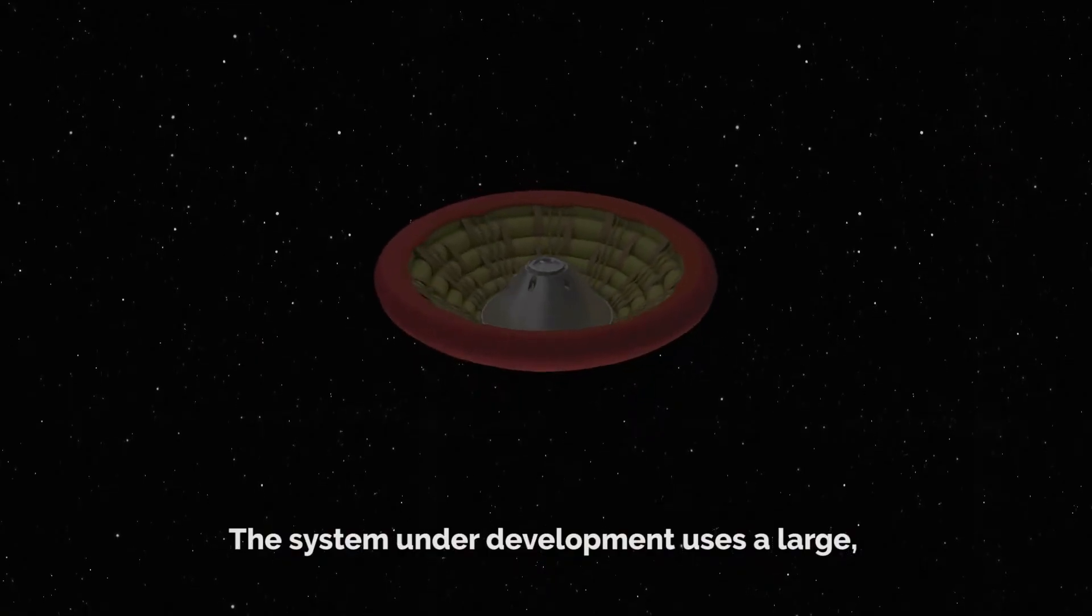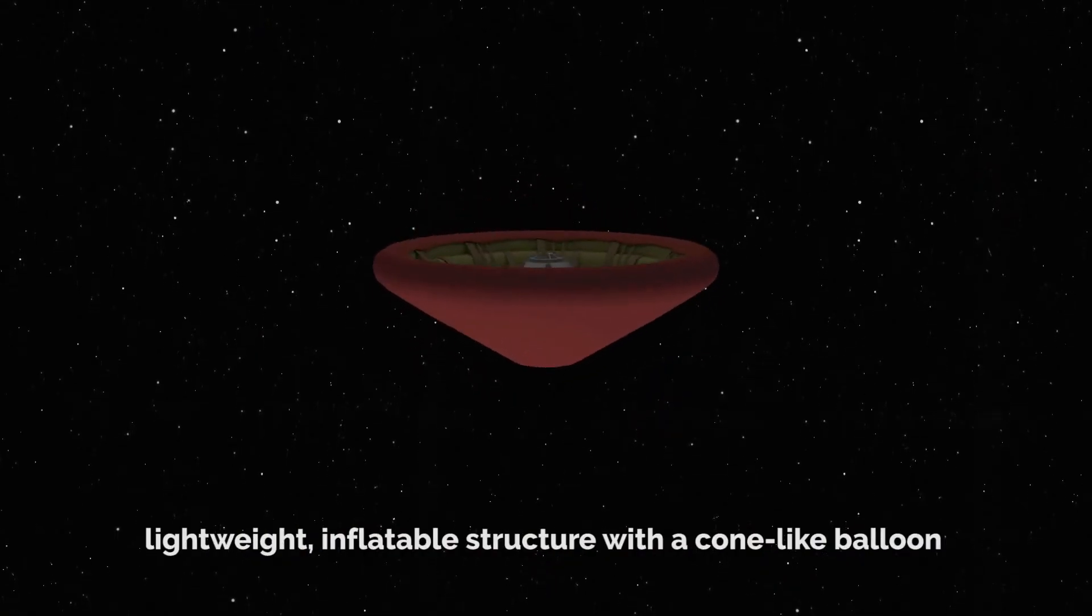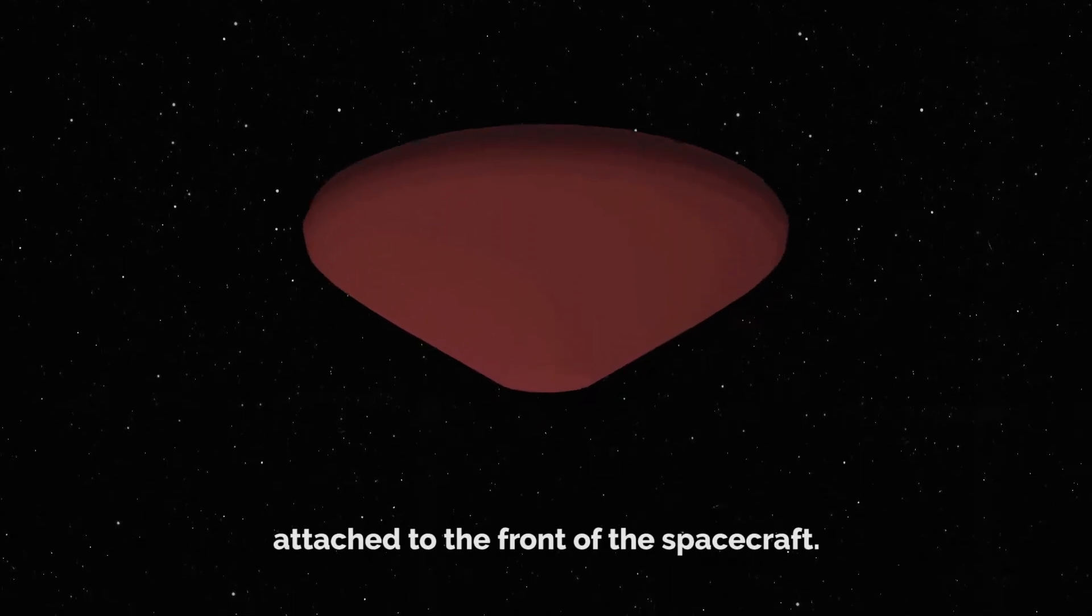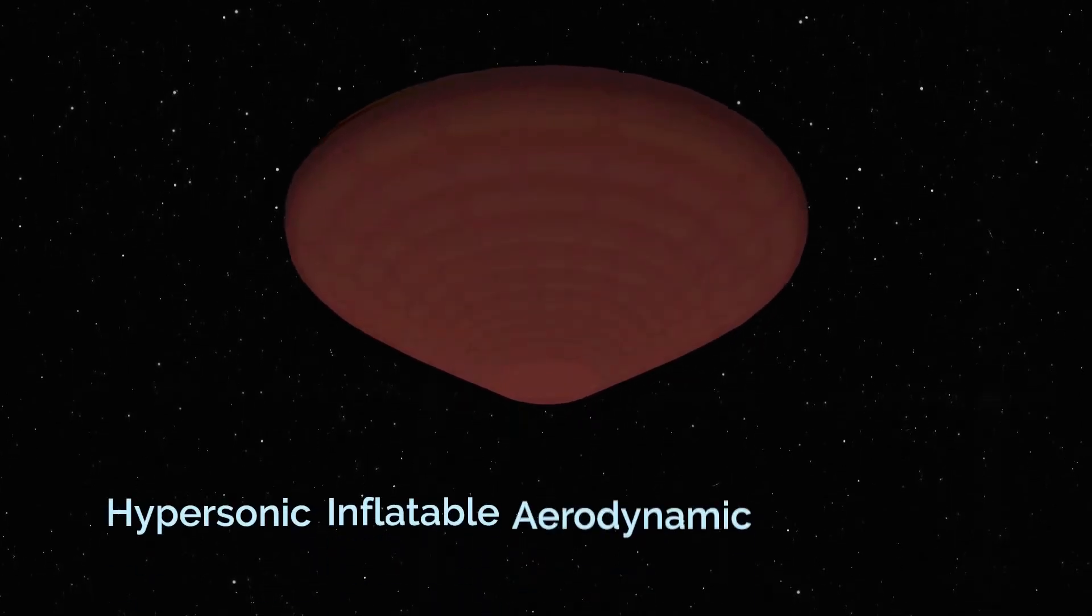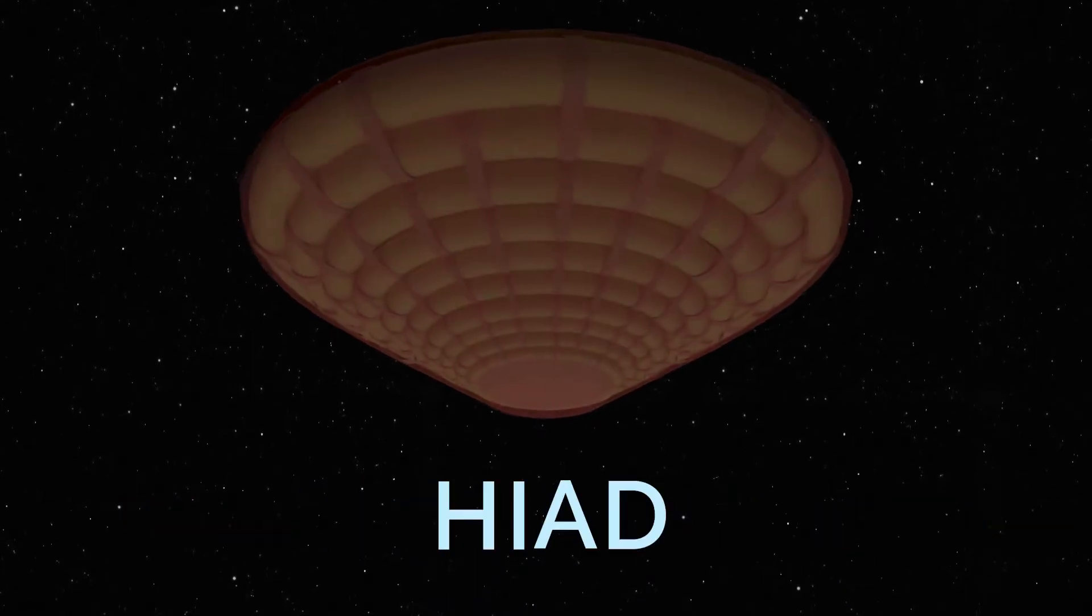The system under development uses a large, lightweight inflatable structure with a cone-like balloon attached to the front of the spacecraft. This is called a hypersonic inflatable aerodynamic decelerator, or HIAD for short.